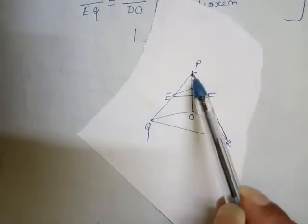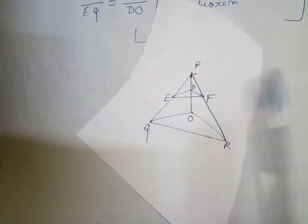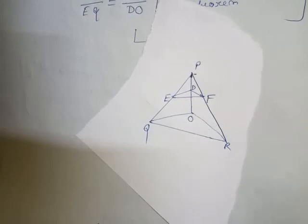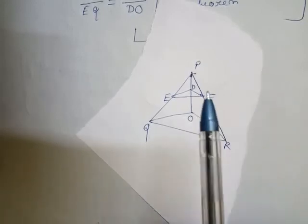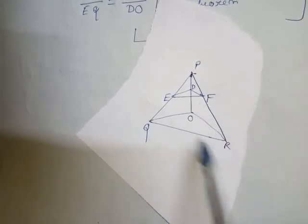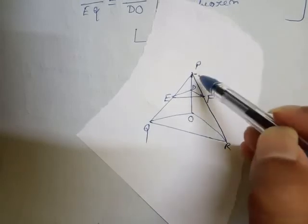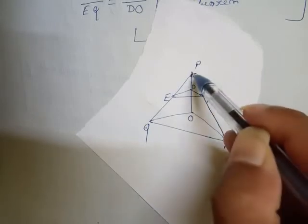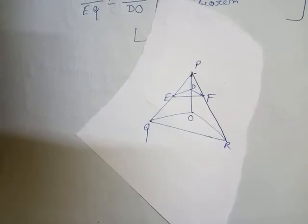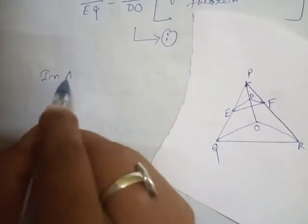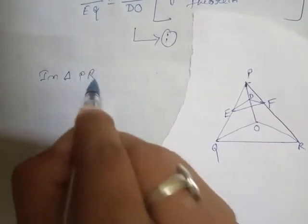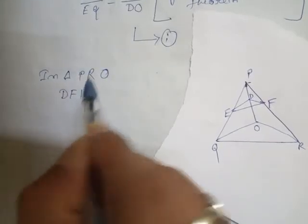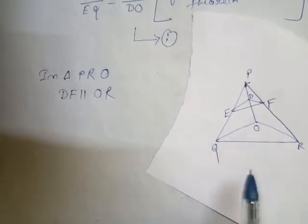Now for the second part: in the first part we took triangle POQ because DE is parallel to OQ. In the second part, the given condition is DF parallel to OR. If DF is parallel to OR, we will take triangle PRO. In triangle PRO, DF is parallel to OR.